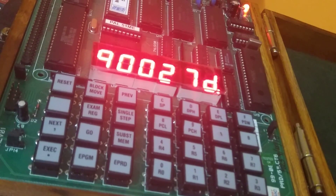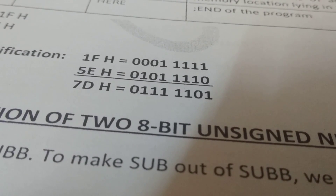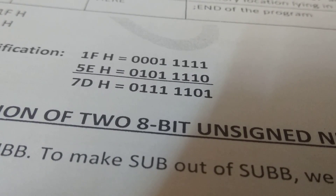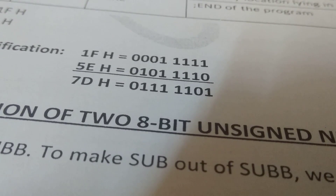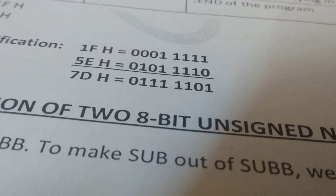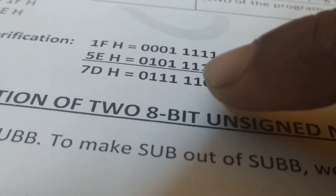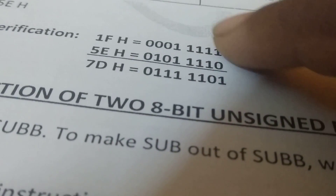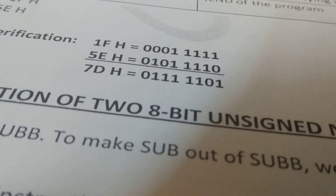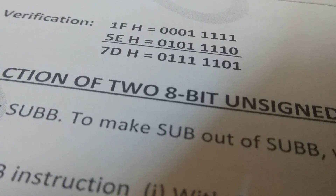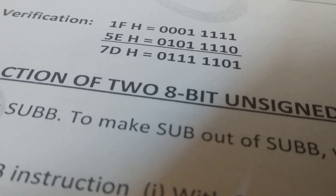You can check the calculation I have done here. 1F can be written as binary: 0001 1111. Similarly, 5E is: 0101 1110. F is fifteen, E is fourteen. When we add these, we get a binary result. Converting to hexadecimal: 0111 is 7, and 1101 is 13, which is D. So the answer is 7D. This result is displayed in the program, confirming the addition is correct.